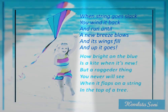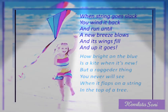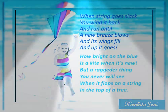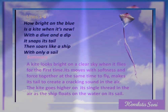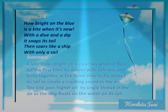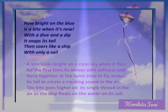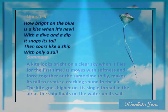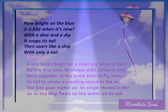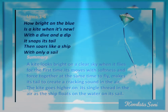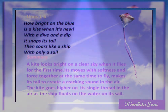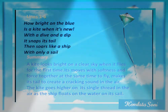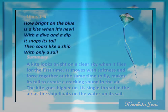So this is the poem and you will recite it afterwards. Here is the explanation for lines 1 to 6. The lines are: How bright on the blue is a kite when it's new, with a dive and a dip it snaps its tail, then soars like a ship with only a sail. A kite looks bright on a clear sky when it flies for the first time — when the kite is new, it looks bright.